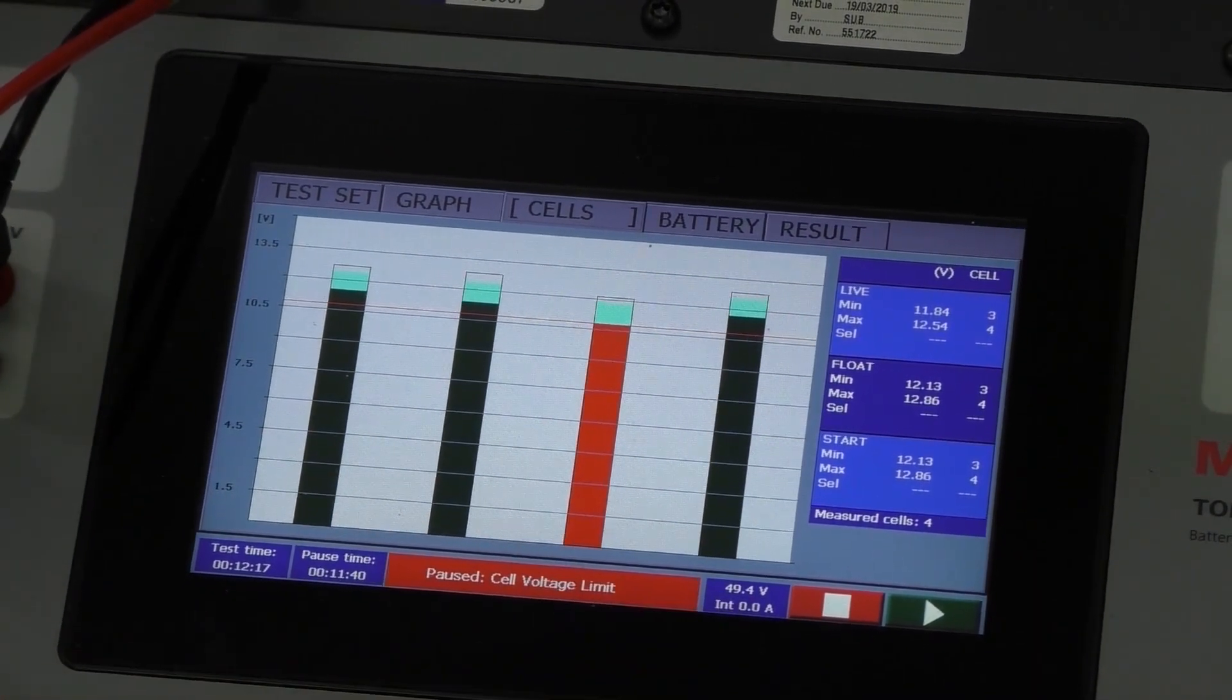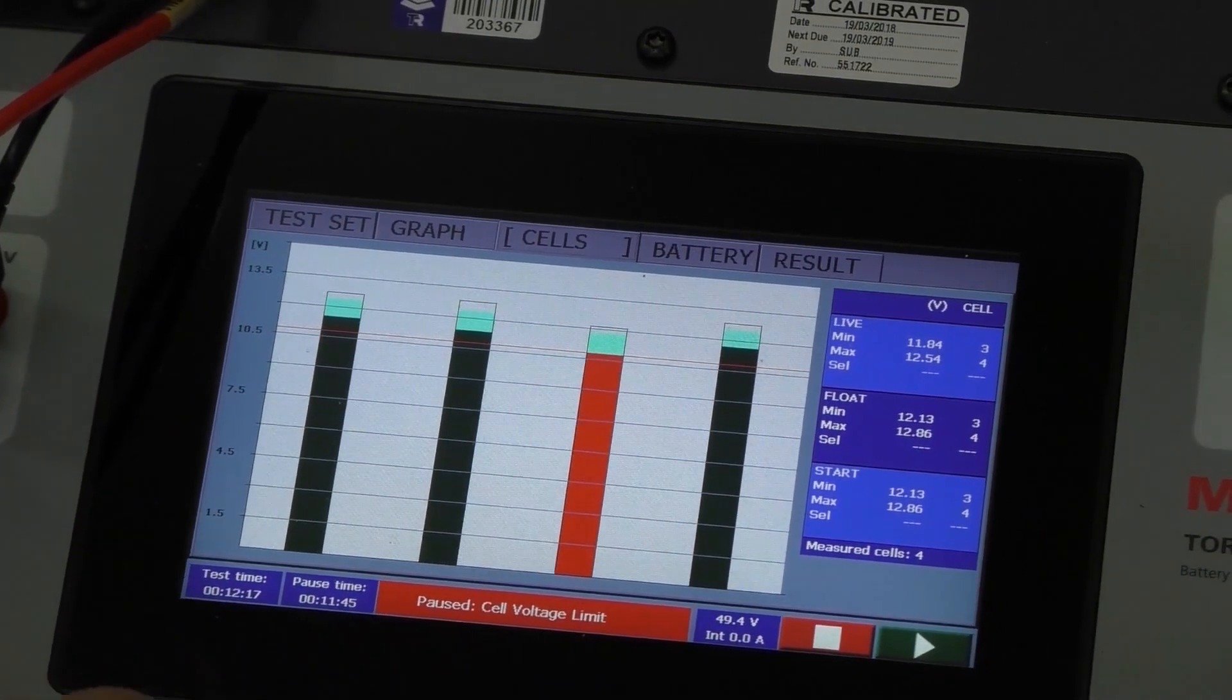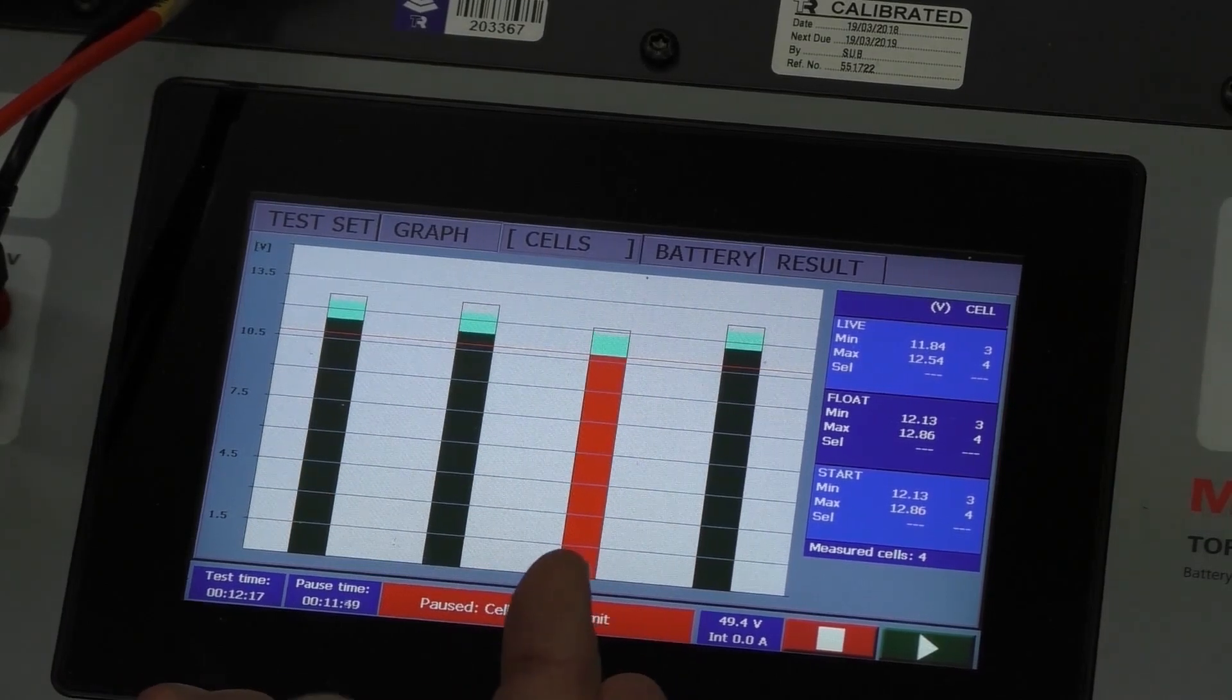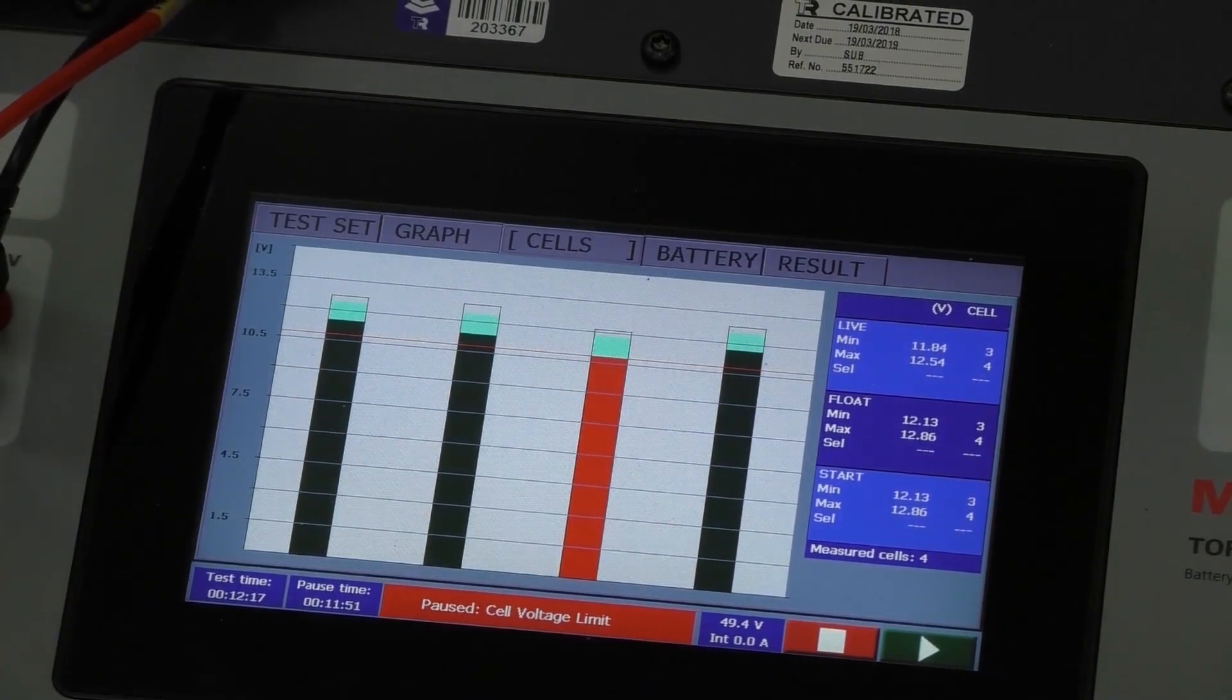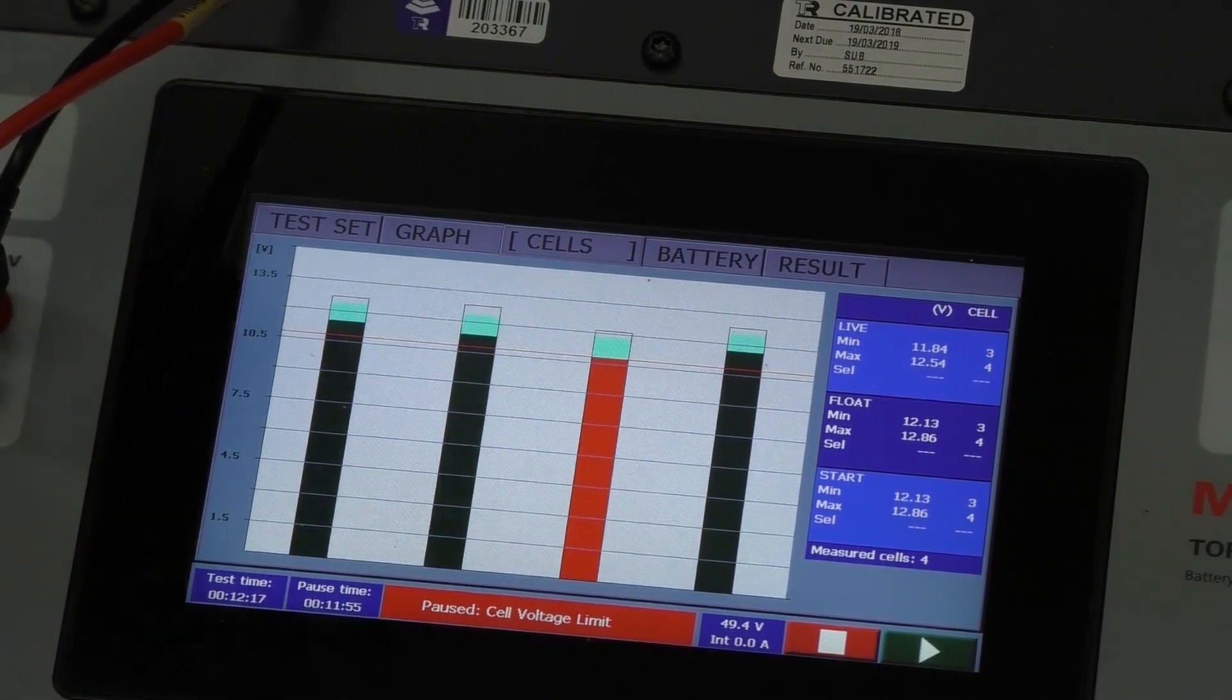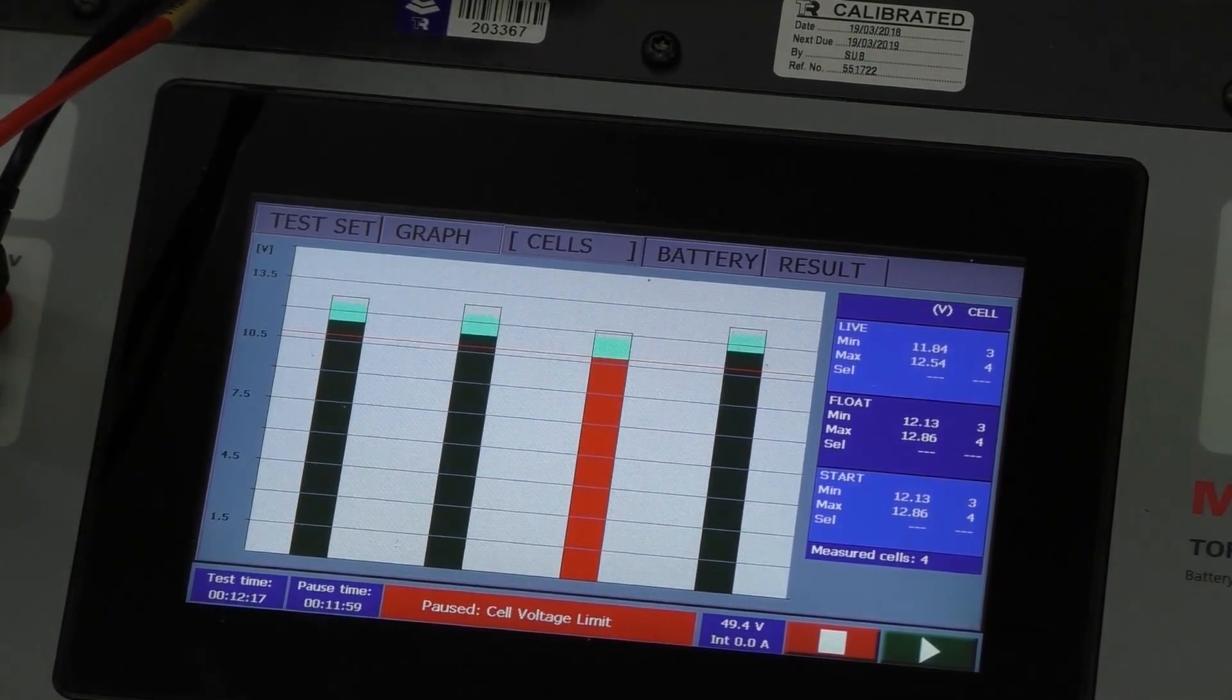As we can see here, the test was running, alarms went off. This thing started to beep madly. We've just paused the beeping so we can hear ourselves think. And we can see here, cell three has failed. So we've managed to prove that this little battery bank was inadequate to the task and cell three needs to be replaced. Simple as that.